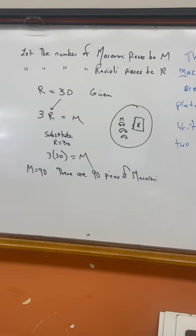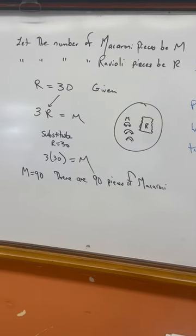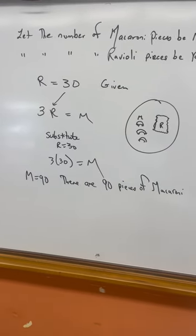So let the amount of macaroni pieces be M, the amount of ravioli pieces be R. R equals 30. That's just what was given. We were told 30 pieces of ravioli.